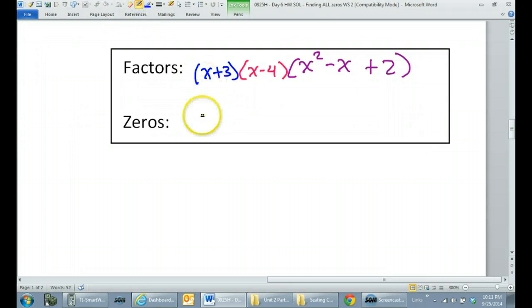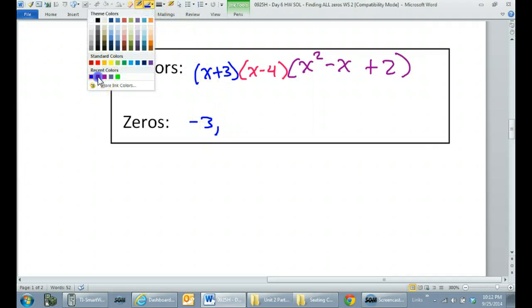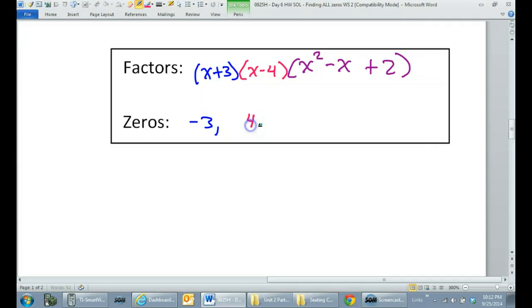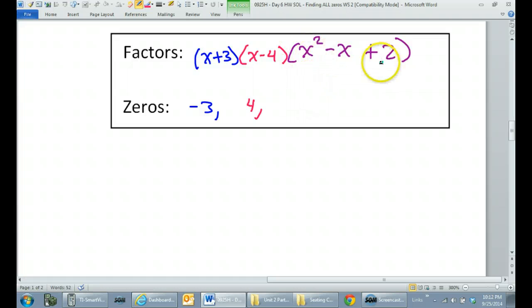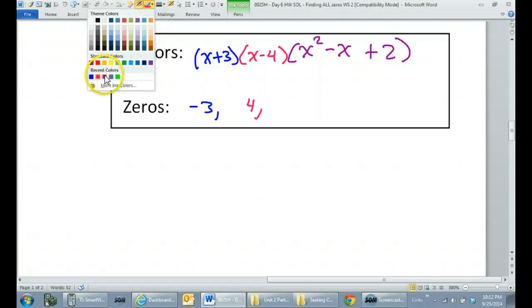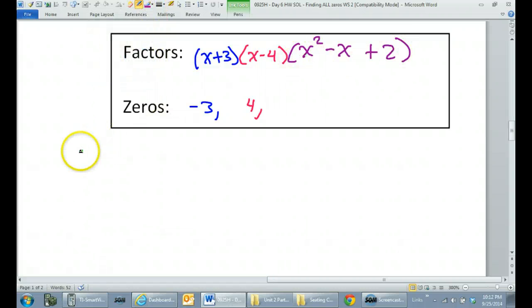And now the zeros. Of course my first zero is negative 3, got that right off the calculator. And I have another zero of positive 4, I got that right off the calculator as well. But to find the remaining zeros, I'm going to have to use the quadratic formula. So I am going to set this equal to zero and solve.